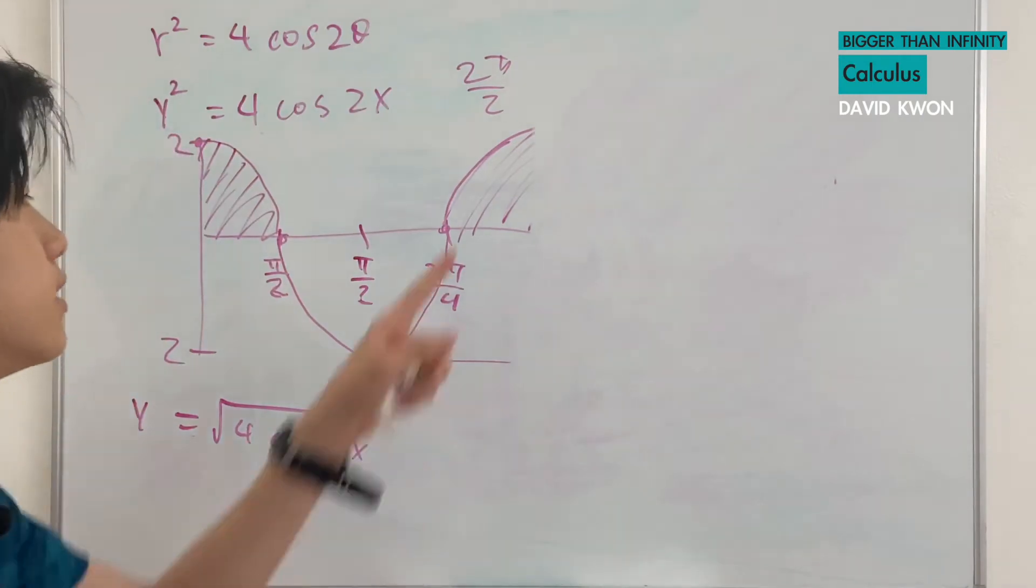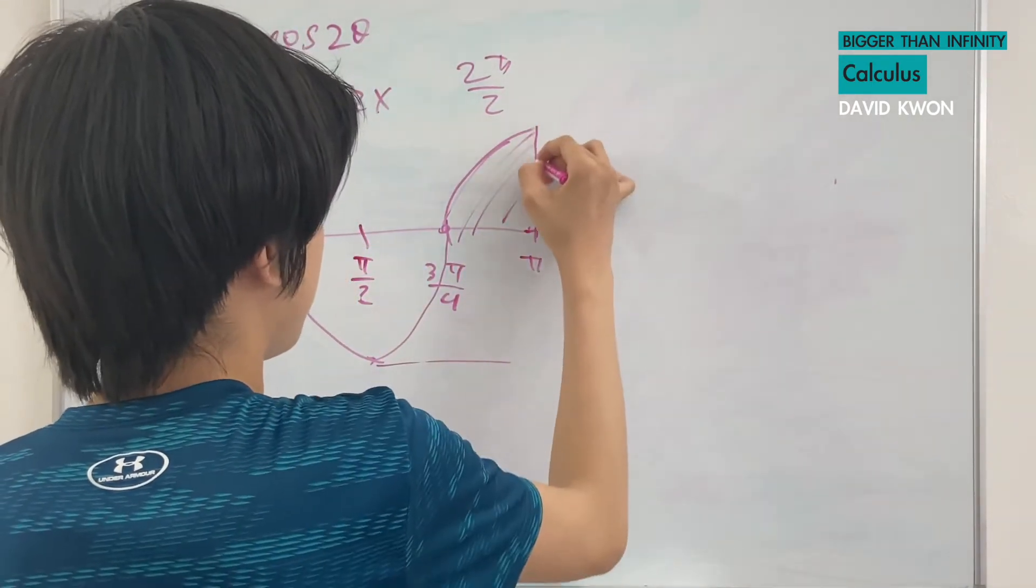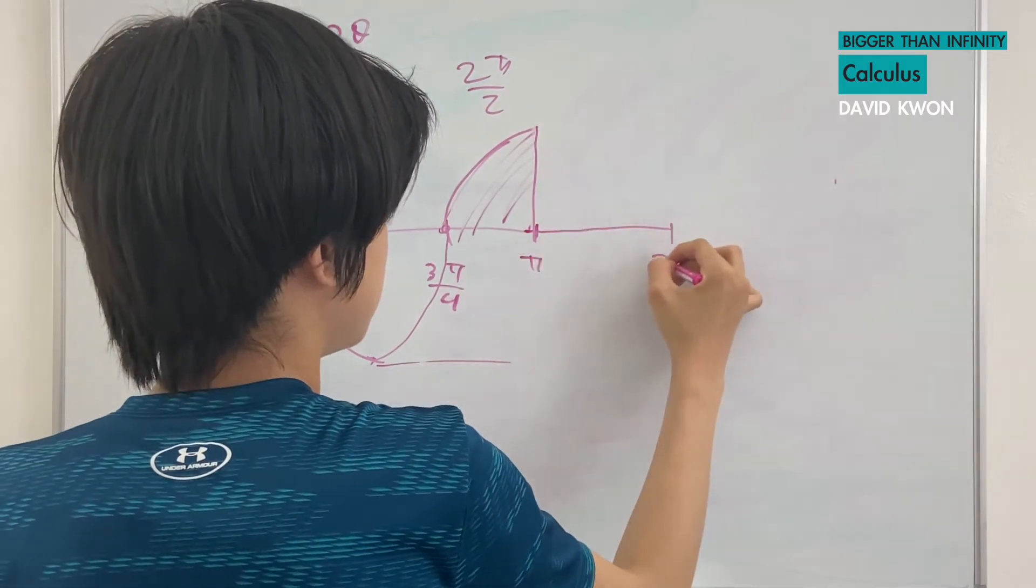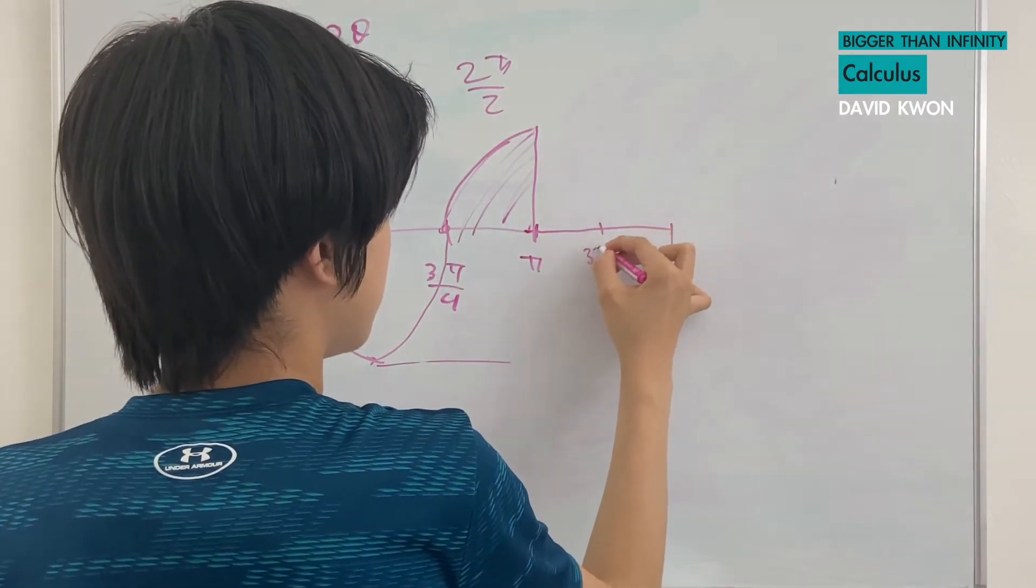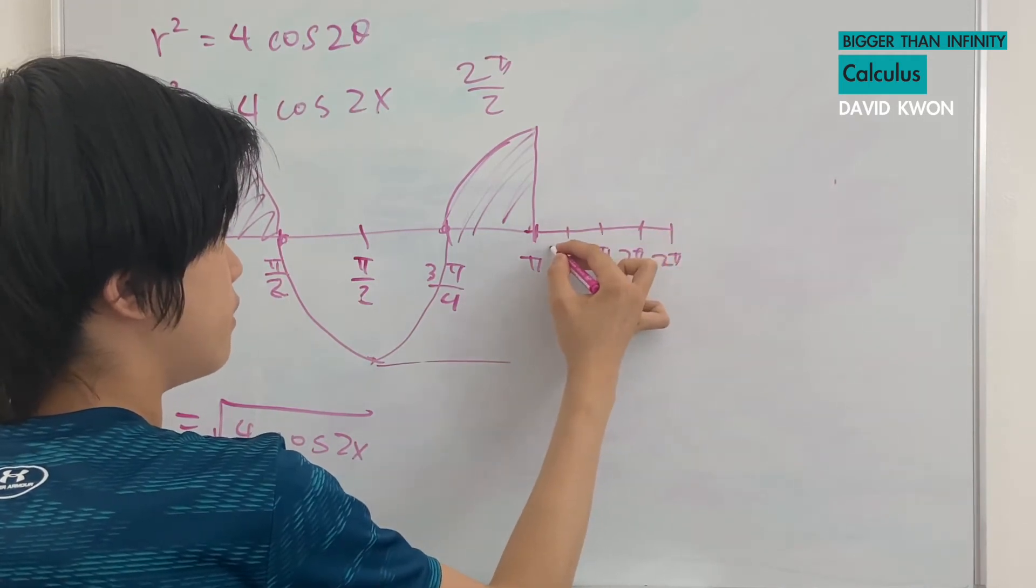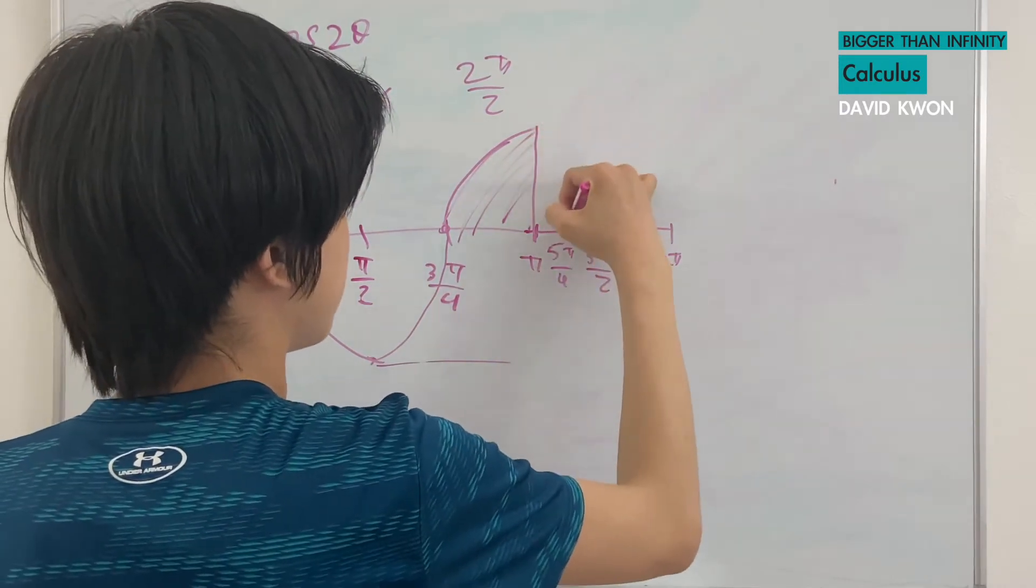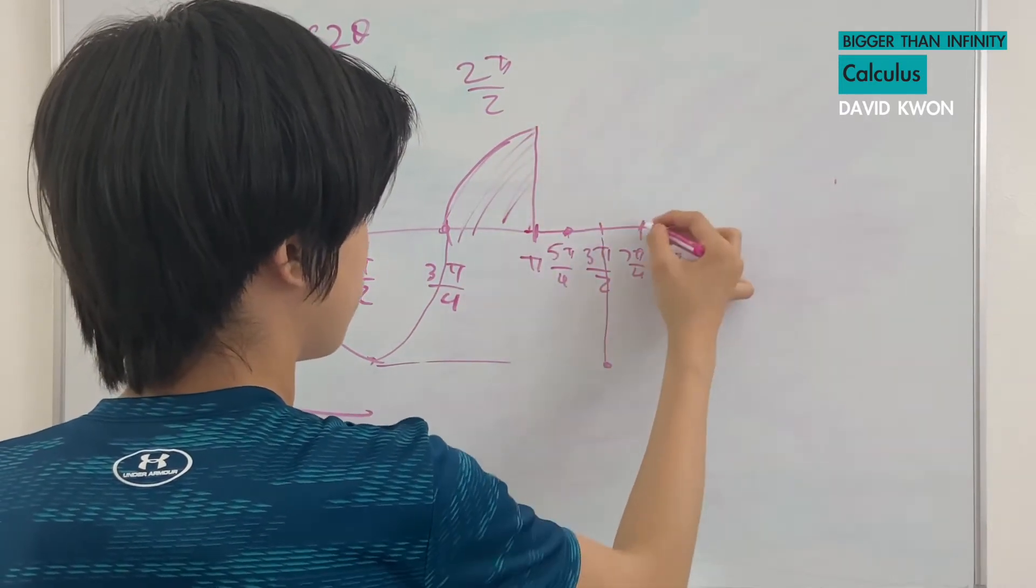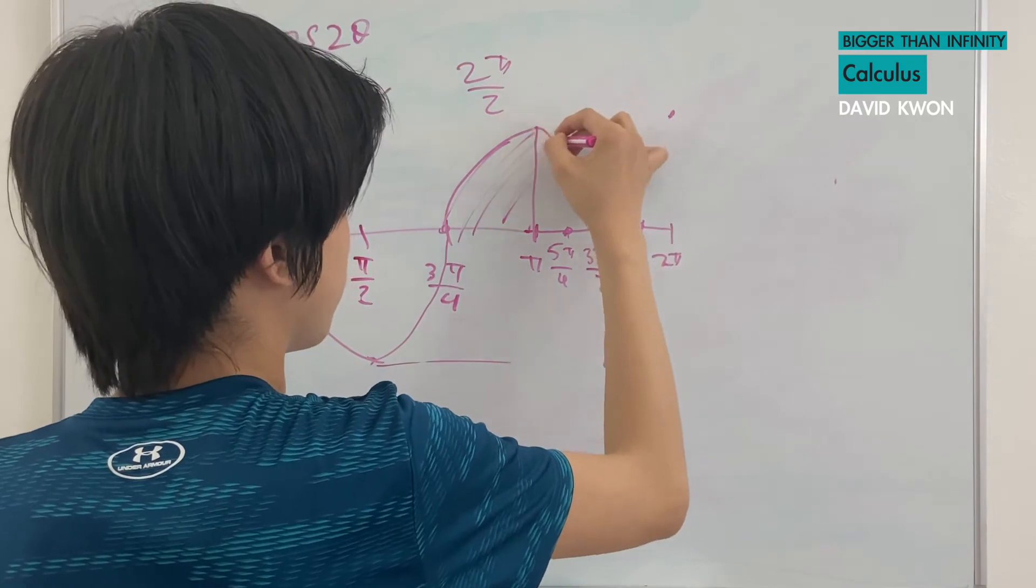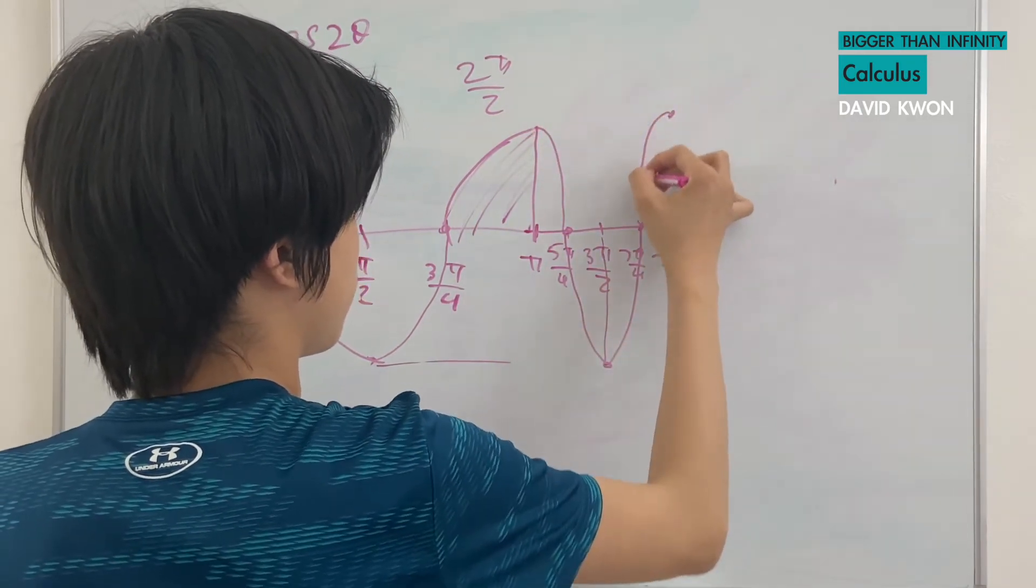And we're going to have to cut this short. Okay. Let's call this π. It's going to be 2π, 3π over 2, 7π over 4, and 5π over 4.